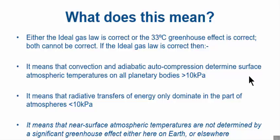What does all this mean? It means either the ideal gas law is correct or the 33 centigrade greenhouse gas effect is correct—both cannot be correct. My money is on the ideal gas law, I'll tell you right now. If the ideal gas law is correct, then it means that convection and adiabatic auto-compression determine surface atmospheric temperatures on all planetary bodies that are over 10 kPa. It means that radiative transfers of energy only dominate in the part of the atmosphere that is less than 10 kPa—in other words, for Earth, above the tropopause. It means that near-surface atmospheric temperatures are not determined by a greenhouse effect, either on Earth or anywhere else.